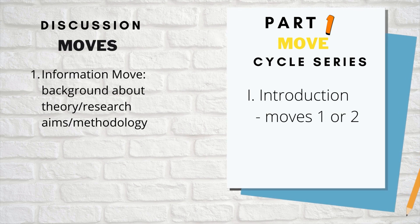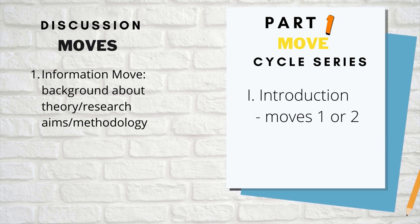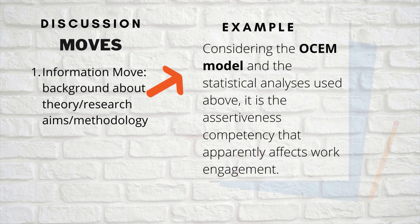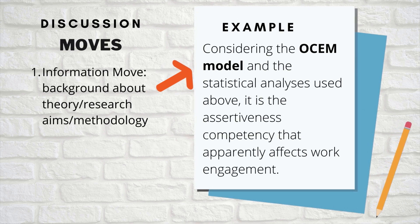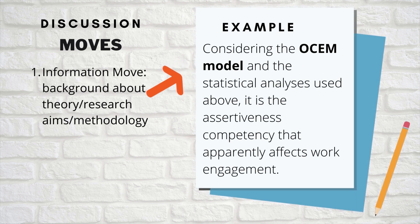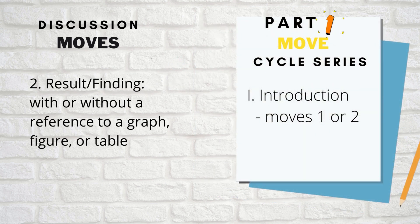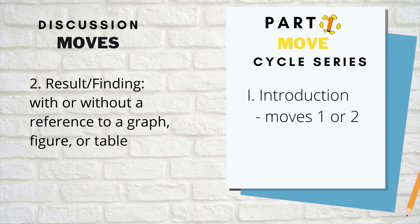The cycle series for the introduction are move one or move two. Move one is the information move, which means the background about the theory, research aims, or methodology. For example: 'considering the OCM model and the statistical analysis used above' — here the theory, the OCM model, is included. You can also combine move one with move two, which is the result.